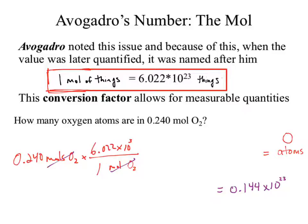What is the unit associated with that number? Going back to the conversion factor: one mole of things equals 6.022 times 10 to the 23rd things. If he's saying one mole of O2, then that needs to be O2.